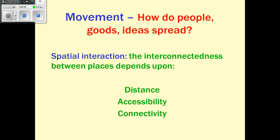Another theme of geography is movement — not just how people move, but also goods, services, and ideas and how they spread. Spatial interaction refers to what happens and interconnections between places, which can change based on distance. Accessibility asks how available goods and transportation networks are to people, and connectivity asks how connected those places are.